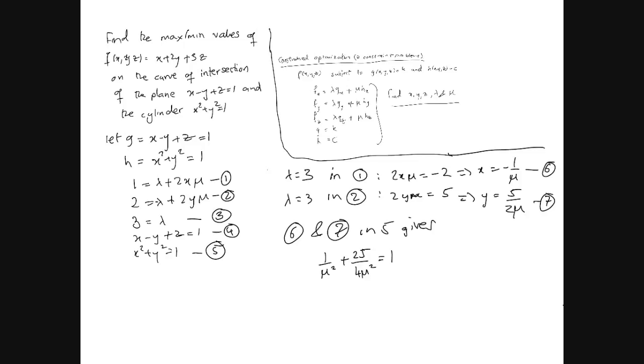That means, this implies, multiply both sides by mu squared, so you're going to end up with mu squared equals 29 over 4. That's reasonably straightforward, which means that mu equals plus or minus square root of 29 over 2.